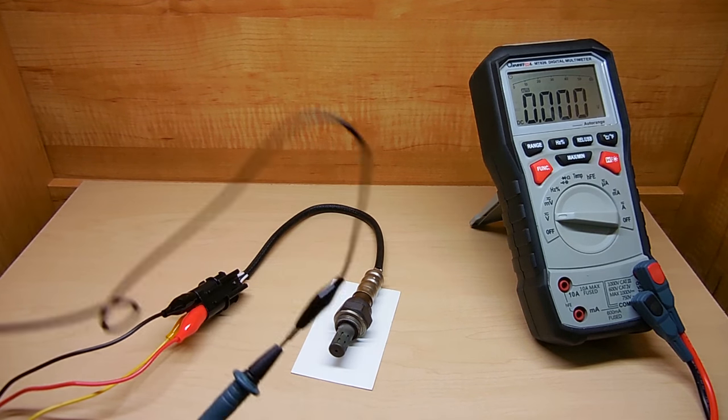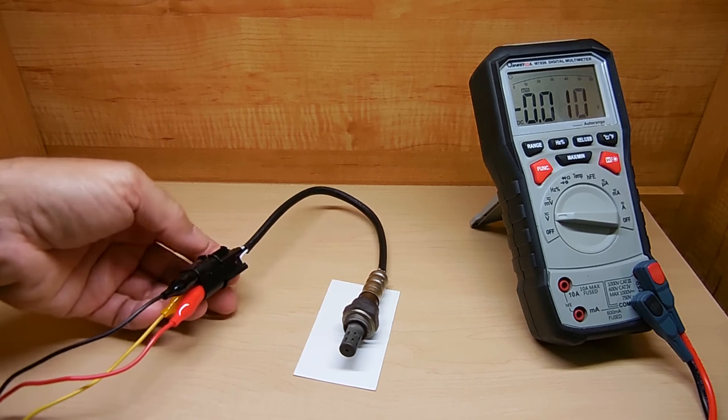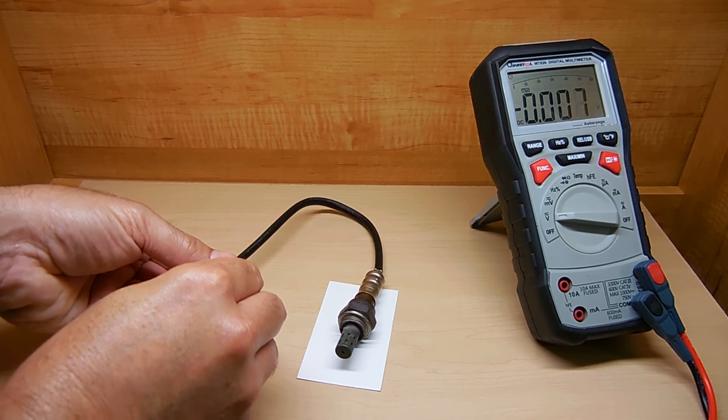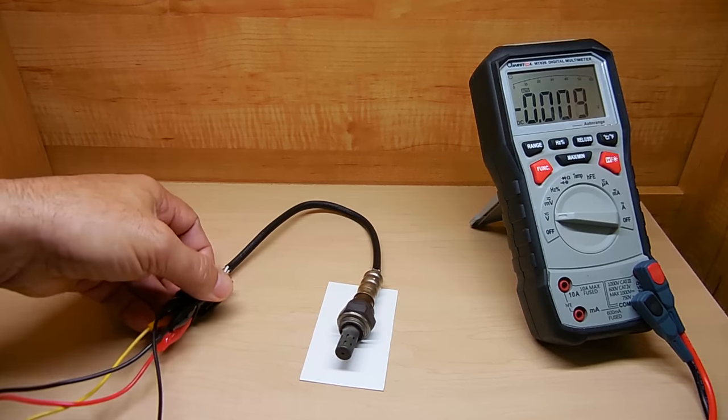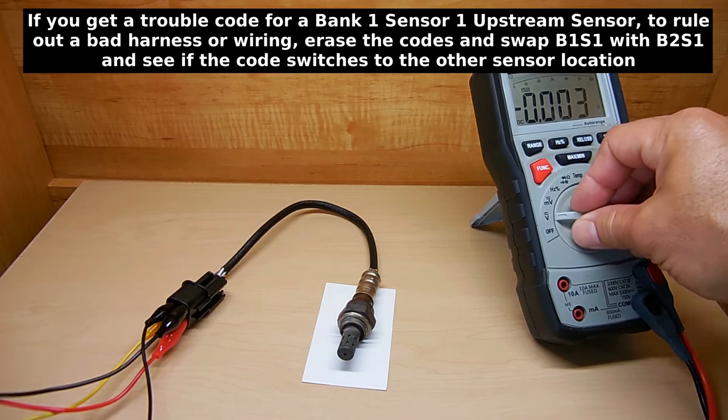Now I'm going to take the negative from the meter and connect that to the sensor ground. So that's going to be the gray one on this one, right there. Now before connecting the positive and negative of the heater for the oxygen sensor to your car battery, you're going to put this to millivolts.